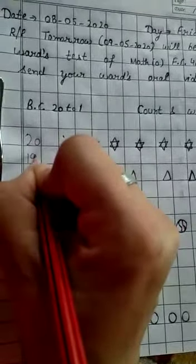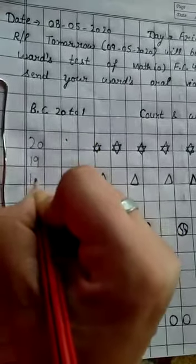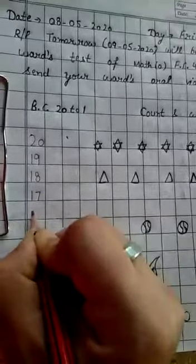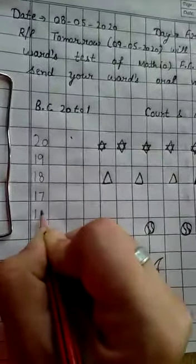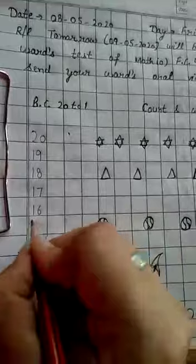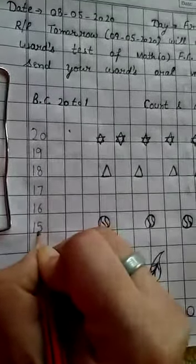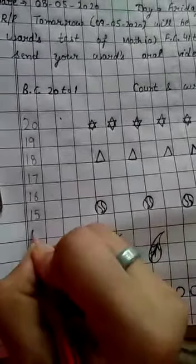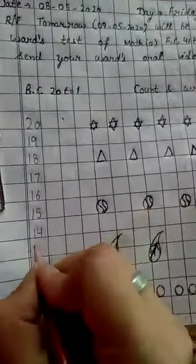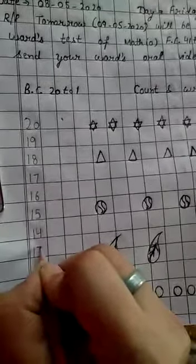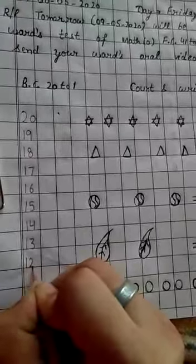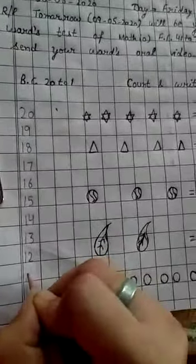19 before 18, 18 before 17, 17 before 16, 16 before 15, 15, 14, 14 before 13, 13 before 12, 12 before 11, 11.